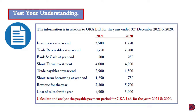The information relates to GKA Limited for the years ended 31st December 2021 and 2020. The data includes inventory, trade receivables, bank and cash, short-term investment, trade payables, short-term borrowings, revenue, and cost of sales. We are required to calculate and analyze the payable payment period for GKA Limited for both years.